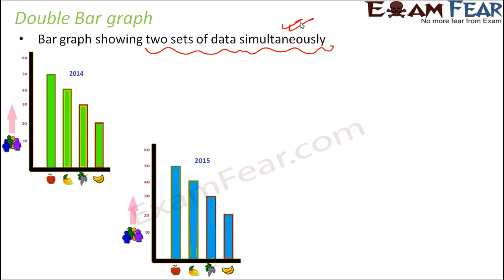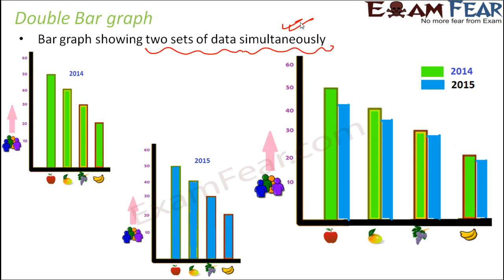Now what if I ask you to represent the entire data of both years in one graph? Is that possible? It is possible only with a double bar graph, because using a single bar graph you cannot do that. For every fruit, you would need one rectangular bar, but how will you know whether that bar represents 2014 or 2015? To solve that problem, we came up with the double bar graph.